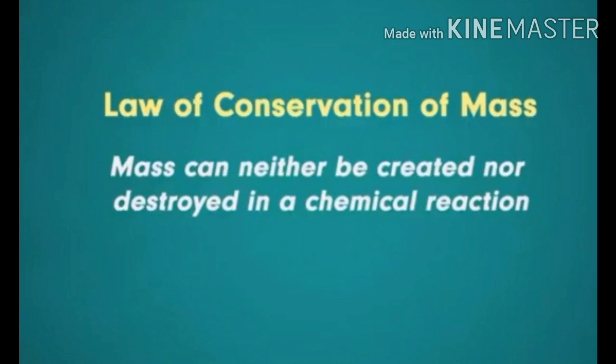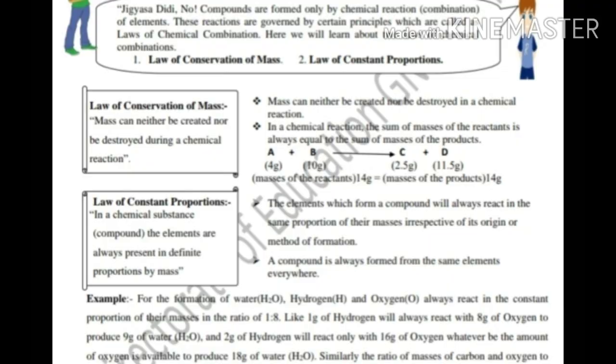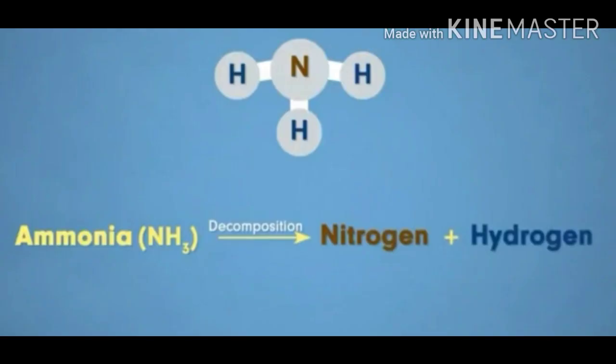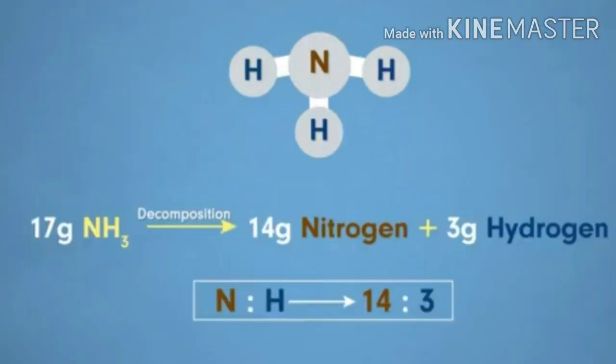Now we will see the other law, law of constant proportions. Law of constant proportions is also known as the law of definite proportions. We will see an example of ammonia NH3. By decomposition of ammonia we get nitrogen and hydrogen.